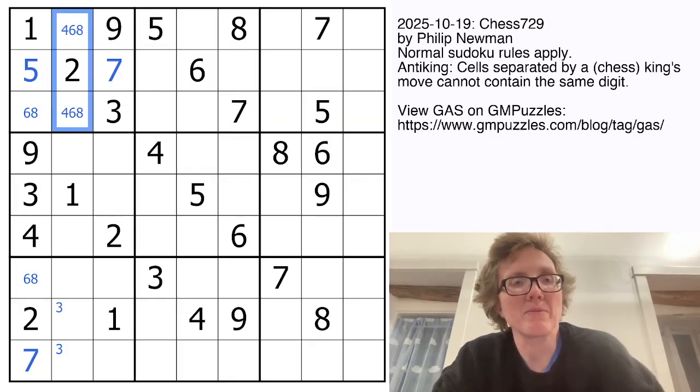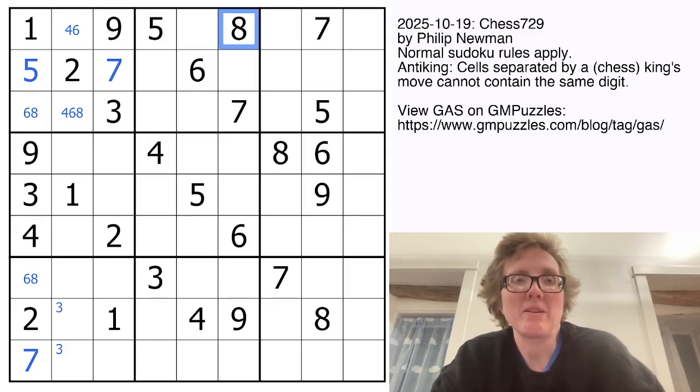We'll mark these as a 6-8 pair. And then we need a 7 in this region too, and it can only go here because we have 7s in rows 1 and 3 already. Then these guys are going to be from 4, 6, and 8. That can't be an 8. So now we need an 8 somewhere in region 3. We have 8s here, here, here, and here, so the only place left for an 8 is going to be right there.